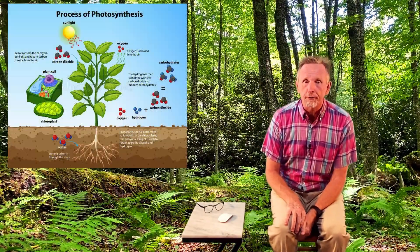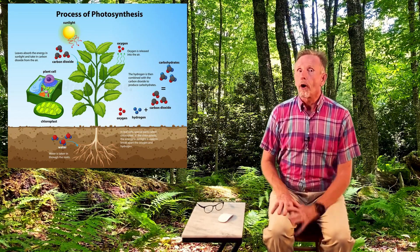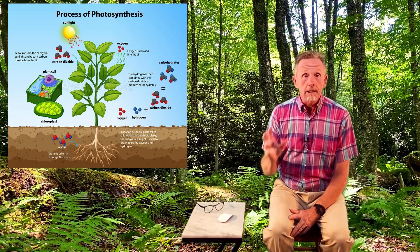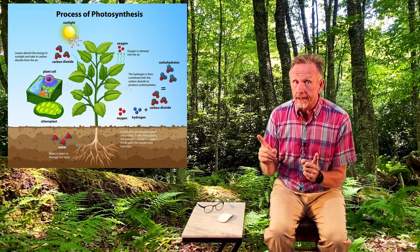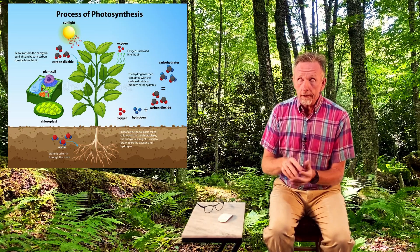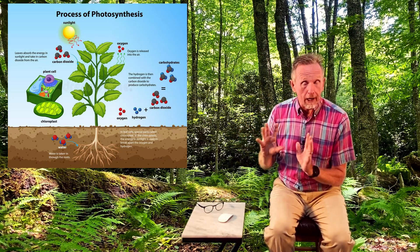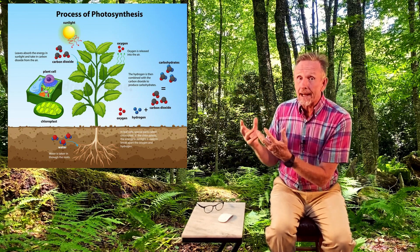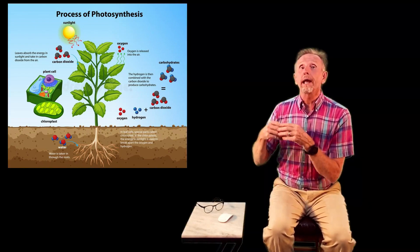We'll break producers and consumers down further. Focusing on photosynthesis — the amazing part of life where a living thing takes two non-living things and turns them into life. A plant takes water, which is abiotic, and carbon dioxide, also abiotic, combines them, and forms a sugar — a biotic, living thing.